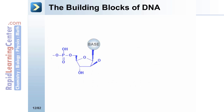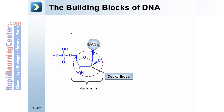The building blocks of DNA. DNA is made up of a deoxyribose, a base, and a phosphate. A nucleoside consists of the base and the sugar — not the phosphate. This is important to remember: a nucleoside does not contain the phosphate. A nucleotide monophosphate, by contrast, does have the phosphate. Note the difference between the nucleoside and the nucleotide.